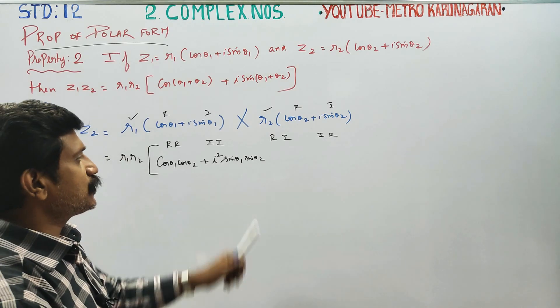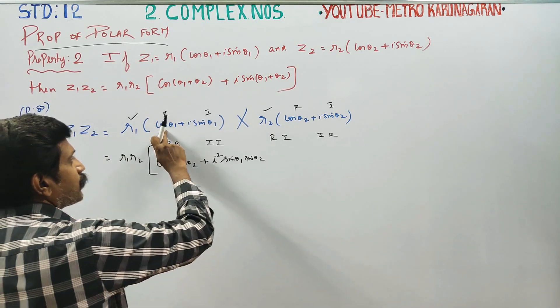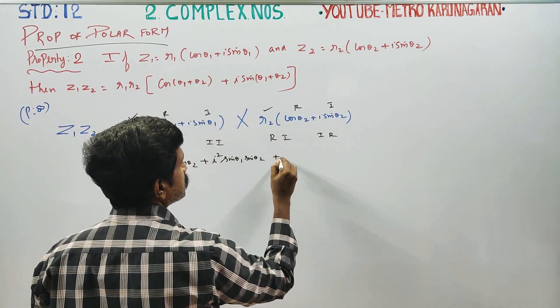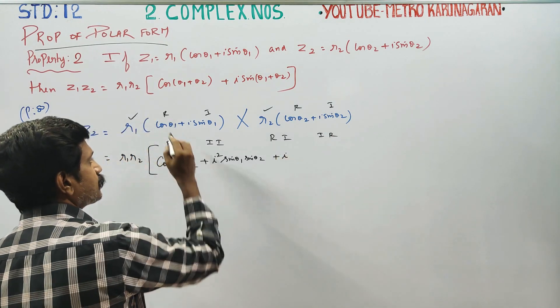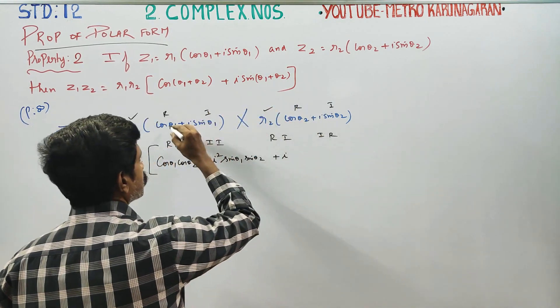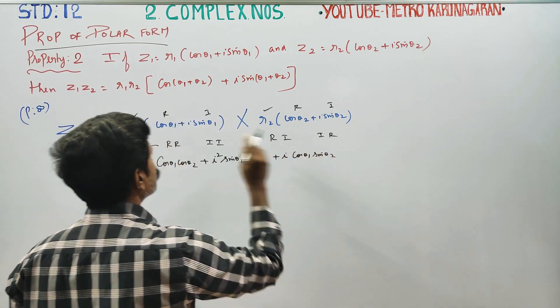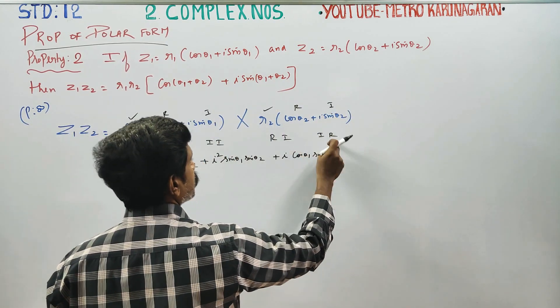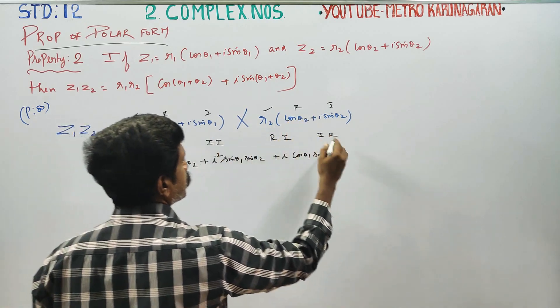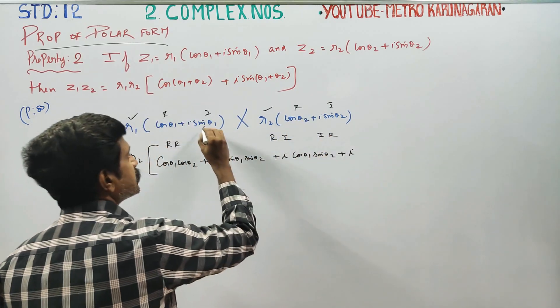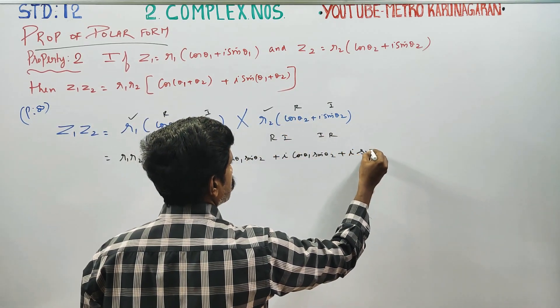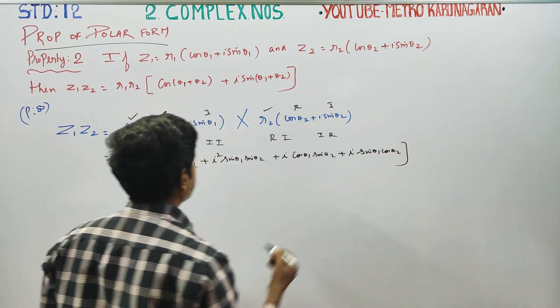Real times real, imaginary times imaginary. Real into imaginary plus imaginary into real. Plus i sin θ1 cos θ2, imaginary into real, plus i sin θ1 into cos θ2.